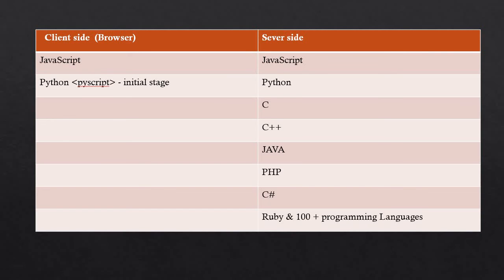To come back to the core point: the specialty of JavaScript is that we can execute it in the browser — the client — and at the same time on the server side. You can't run C, C++, Java, PHP, Python, or any other language on the client side. So in front-end development, JavaScript is the only king. Python via PyScript is still in its initial stages, so JavaScript remains the dominant language on the client side.